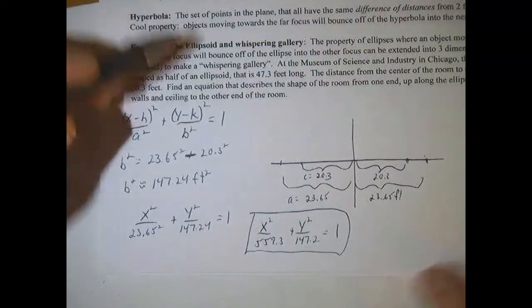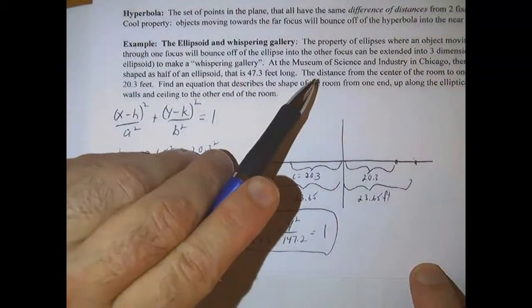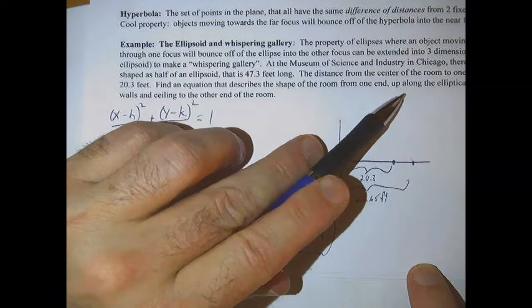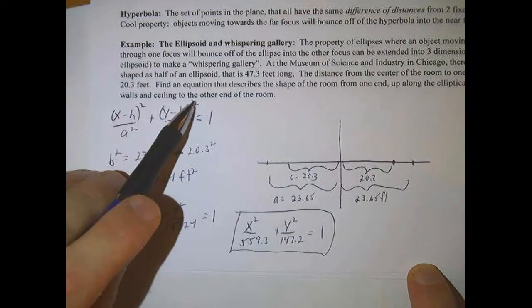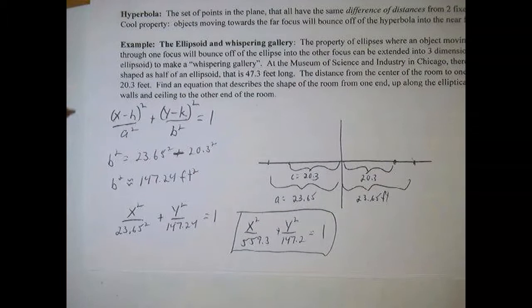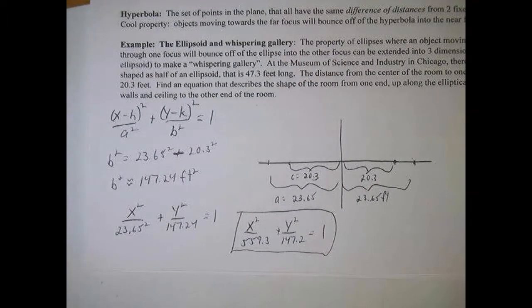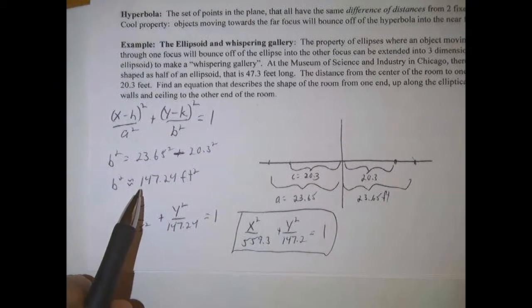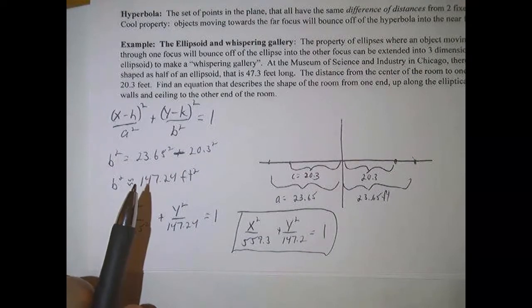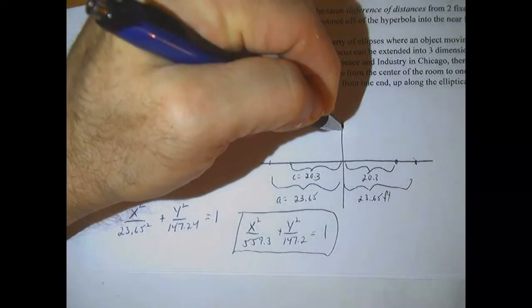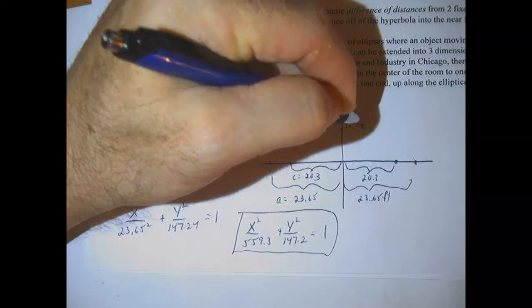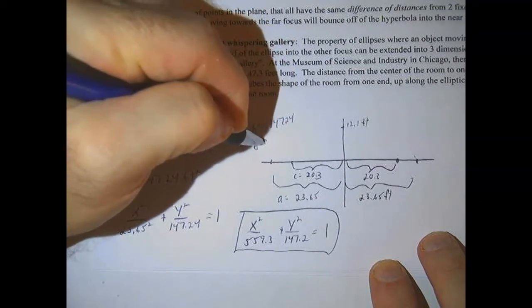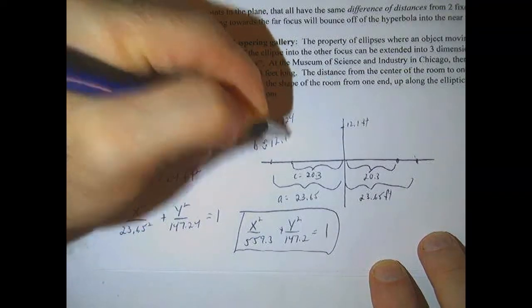Now, if we want the height of the ellipse, which is the next thing that asks, we found the equation that describes the shape of the room from one end to the other, and then from the ceiling. So we just want to get that height. So we would just take the b that we've already found, and we have to take the square root of it, because we only found b squared. So the square root of 147.24 is 12.1. So this would be about 12.1 feet. So again, b squared is 147.24. So b is approximately 12.1, just taking the square root.